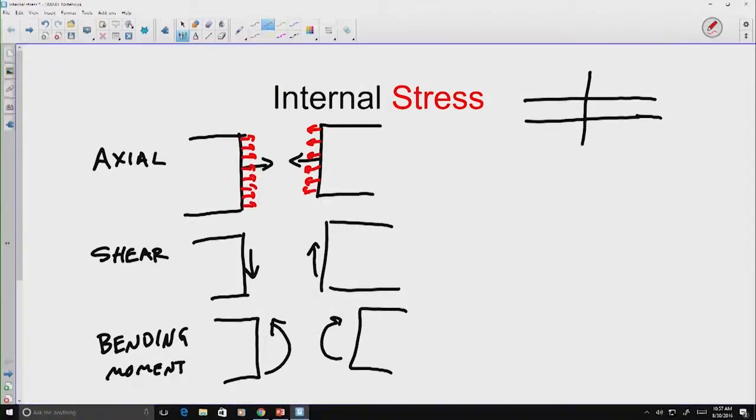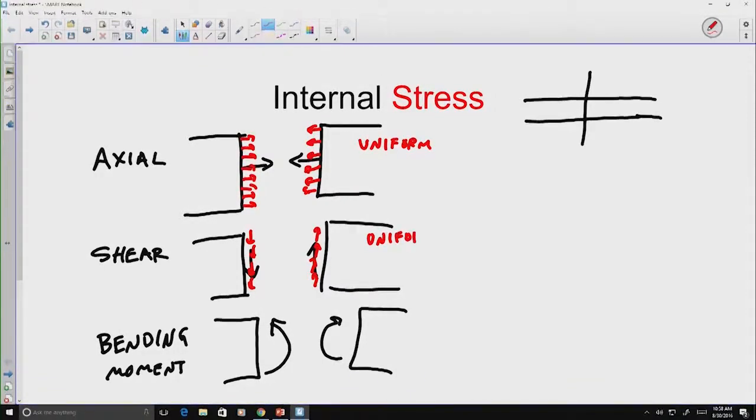In the case of our axial force, this roughly represents a uniform distributed force. In the case of our shear force, this similarly represents a uniform distributed force. But in the first case, in axial, it was normal, and in this case, it's tangential.